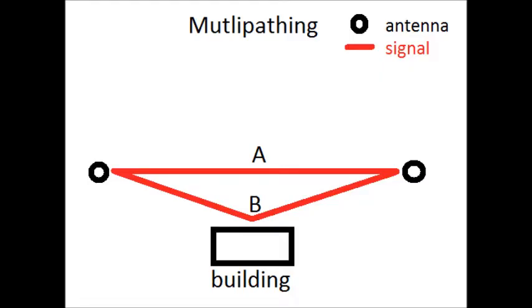Multipathing is a really big problem we have. The black is the antenna and the red is the signal. The signal leaves the right side heading to the left at the same time. A is the shorter route and B is the longer route. So B is going to arrive just after A. And that's going to cause some static interference with the transmission. Usually an overlap.